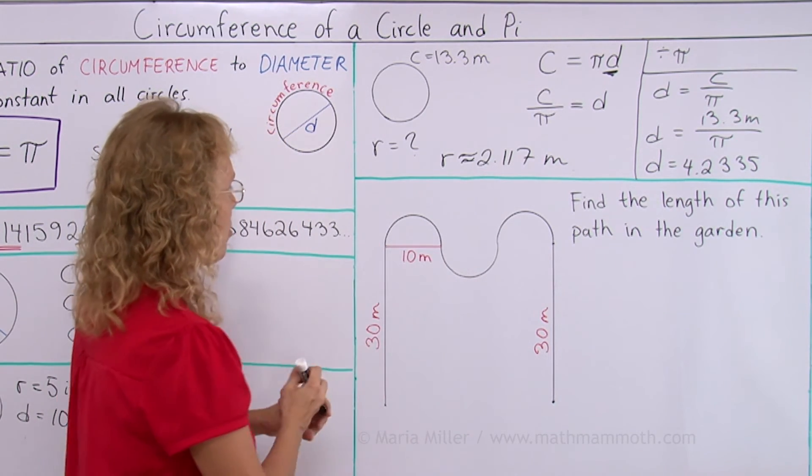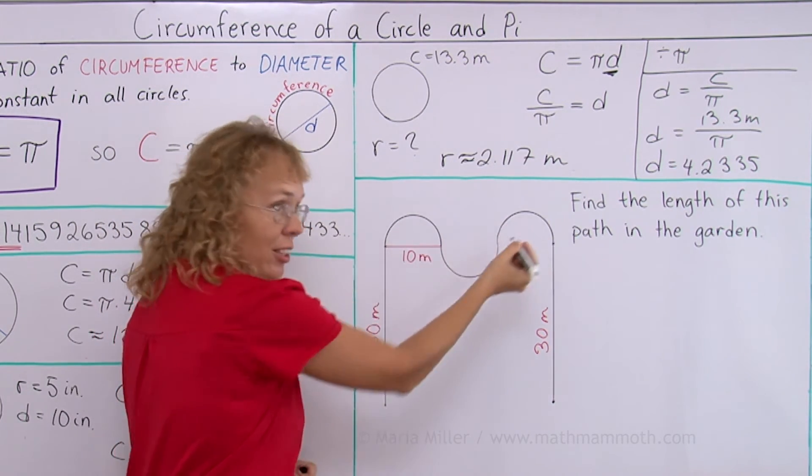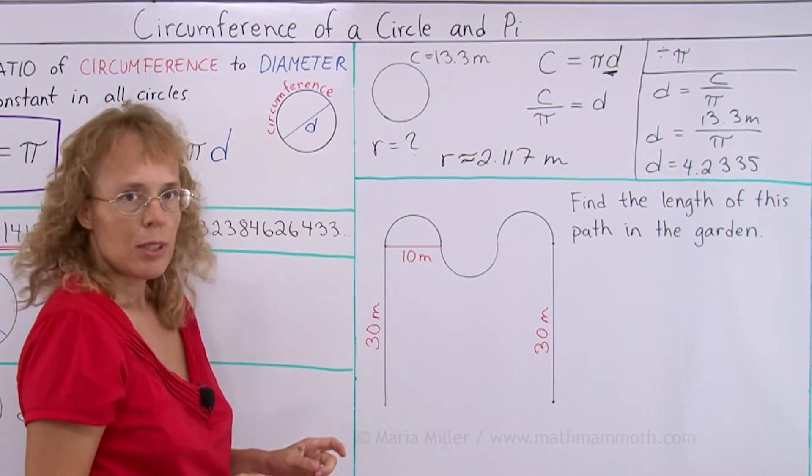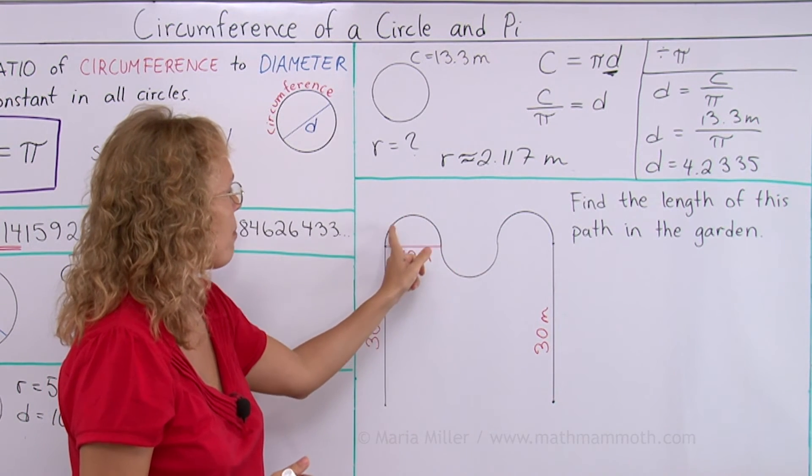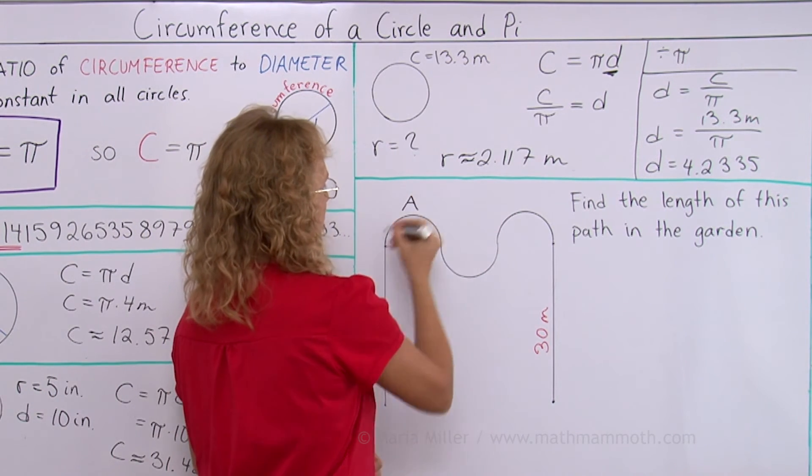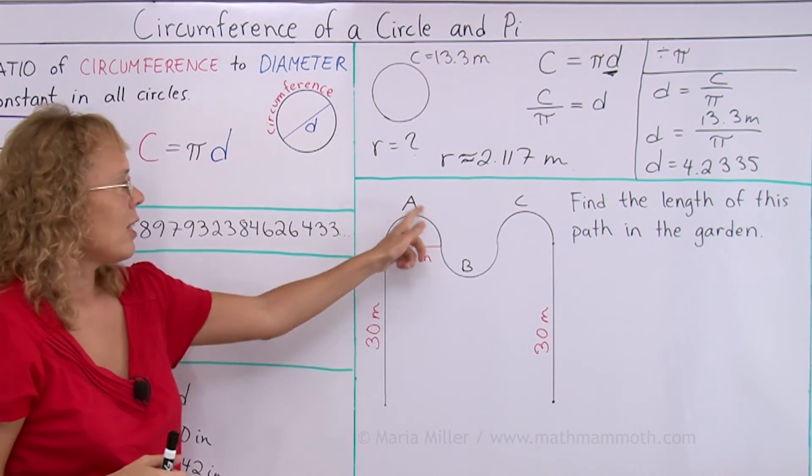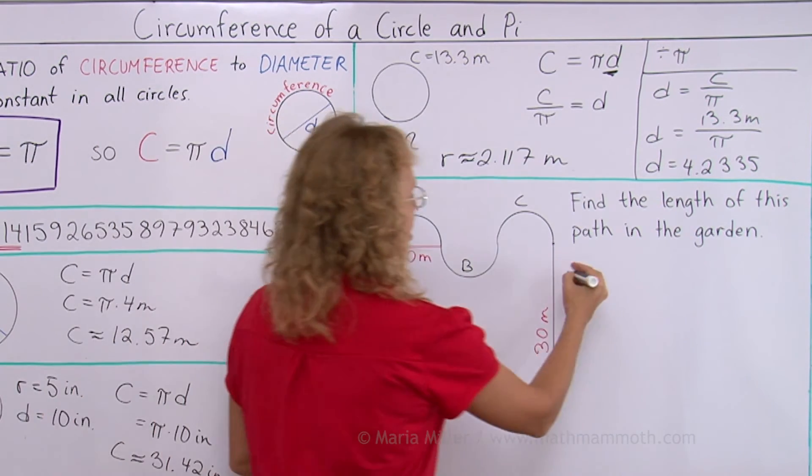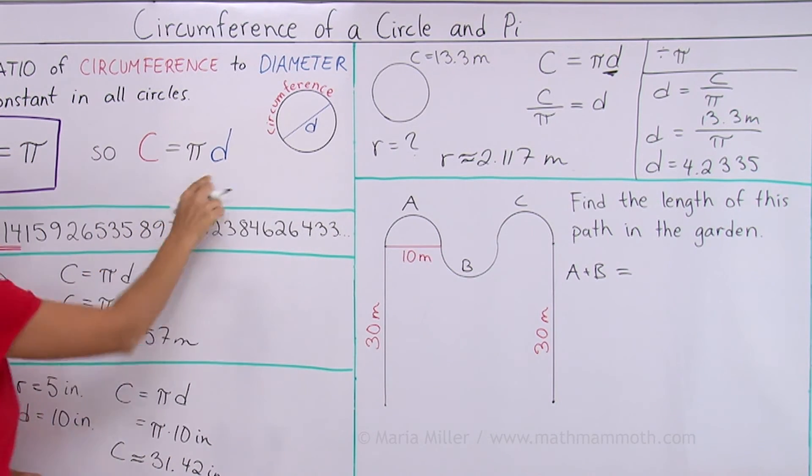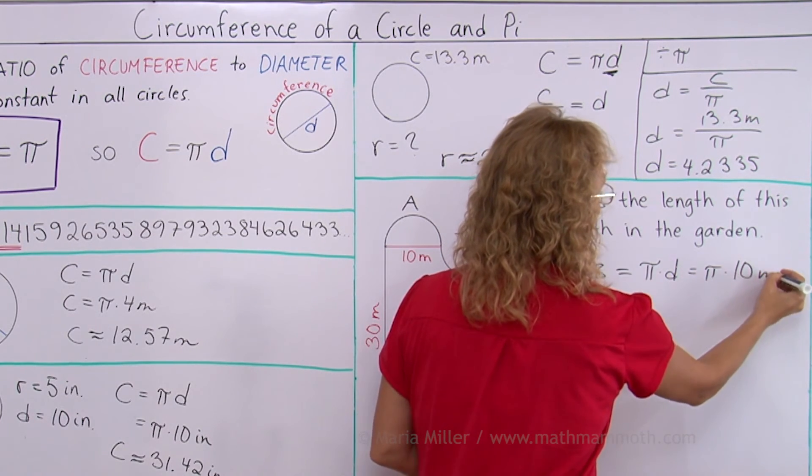And there is first 30 meters up to this point. Then we have the half circle, another half circle, a third half circle and then another 30 meters. So we will calculate now of course the length here. This is half of a circumference of a circle. Let me call this half circle A and then this one B and this one C. And of course I can just calculate A and B together would make a whole circle. So the paths A and B together would be circumference of a circle, right? So that's pi times D, which is pi times 10 meters in this case.